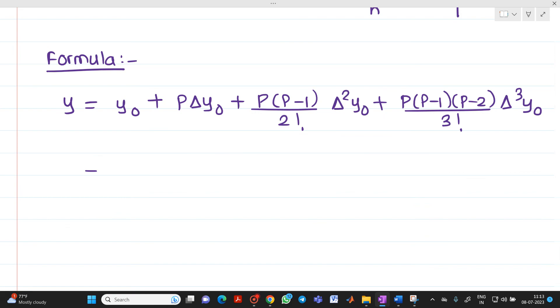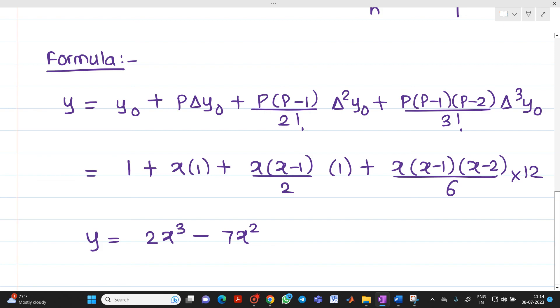So substitute the value. y0 is what? 1. In place of P we have to put here x into 1 plus x into x minus 1 upon 2 factorial is 2 into 1 plus x into x minus 1, x minus 2, 3 factorial is nothing but 6 into 12. So if you solve this, you will get an equation 2x cube minus 7x square plus 6x plus 1.